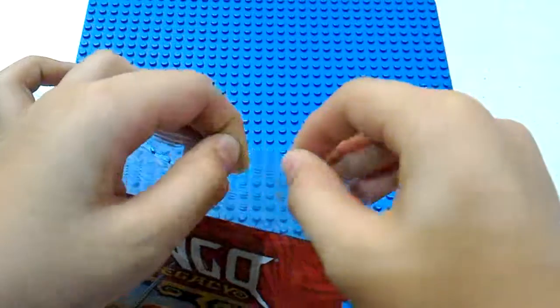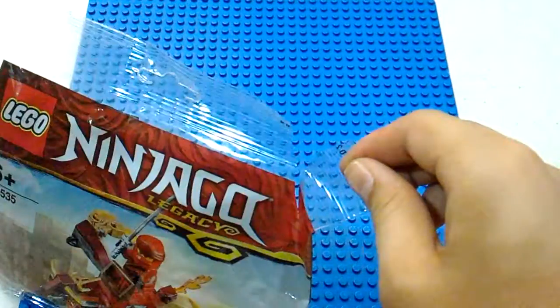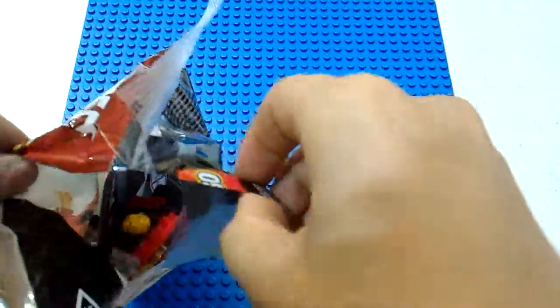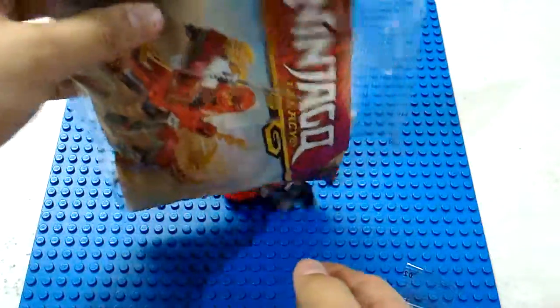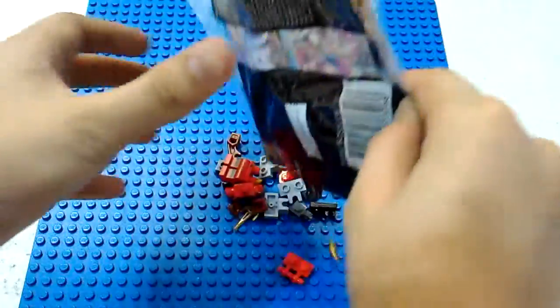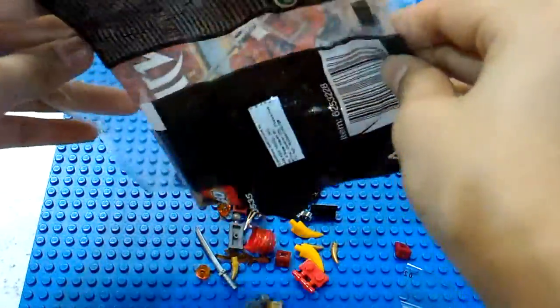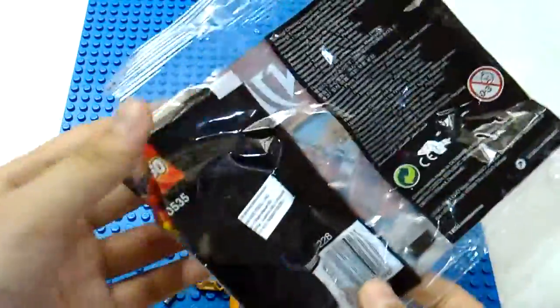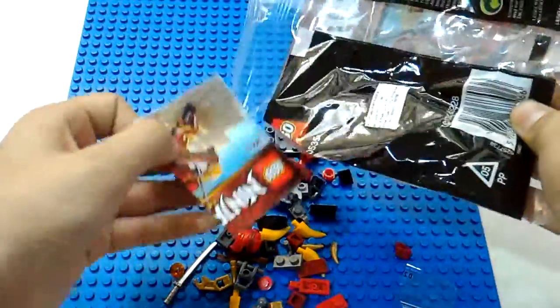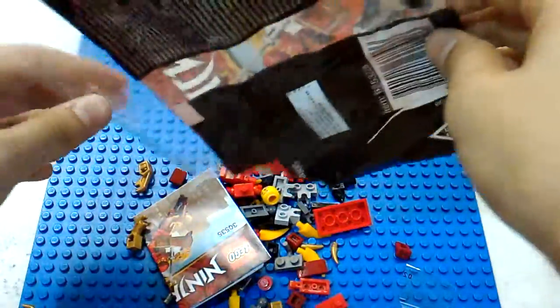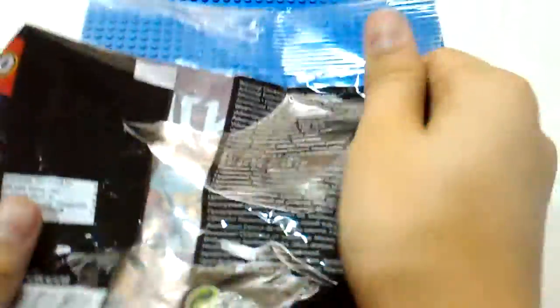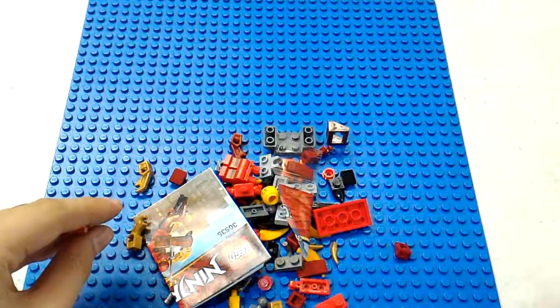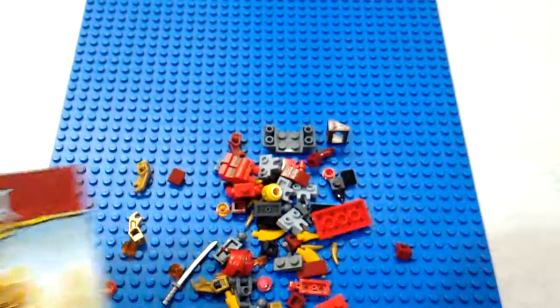Let's just open that. Here it is. I think this is a Kai and his Dragon set. The instructions is over here. Let's just put that aside. This is the instructions of this set.